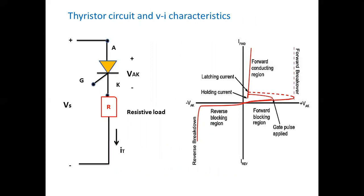Regarding the thyristor circuit and IV characteristics: the voltage drop due to ohmic resistance across the four layers of an SCR is very small — less than or equal to one volt. In the on-state condition, the anode current is limited by external impedance or resistance. The anode current must be more than the value of the latching current. Here we discuss about the SCR's latching current and holding current.